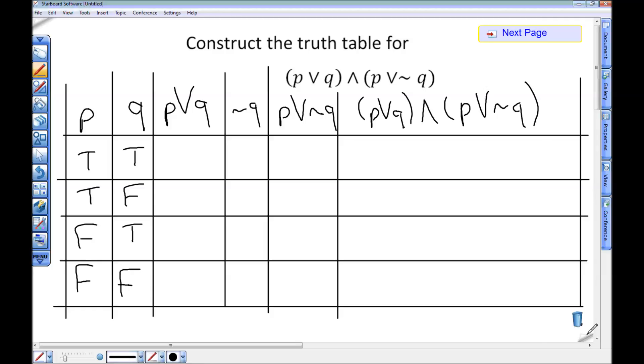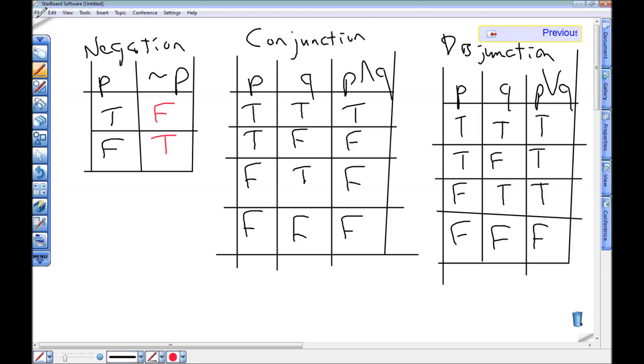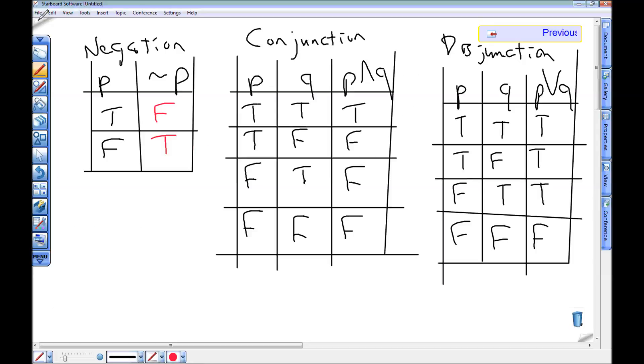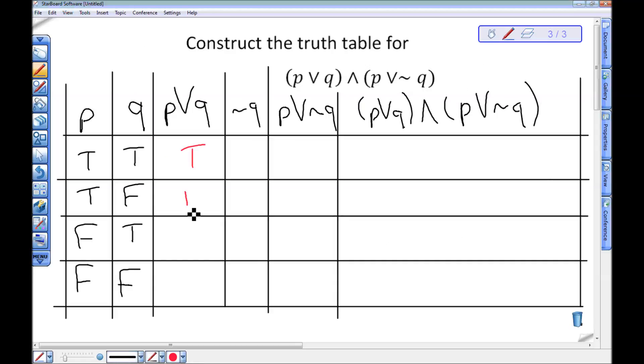My first column I want to fill in is the disjunction of P and Q, so P or Q. Looking at this first row here, I have true or true. And if I peek at my disjunction table, it tells me that true or true is true, so I'm going to put a T right here. In my next row, I have true or false. So looking at my table for disjunction, true or false is true. So I'm going to put a T right here.